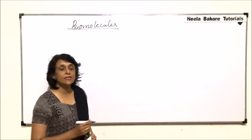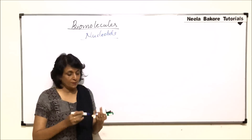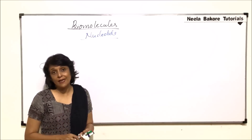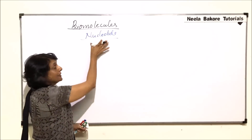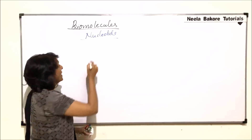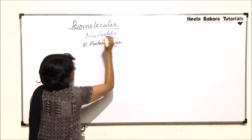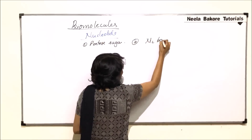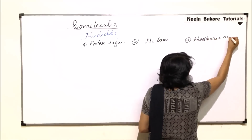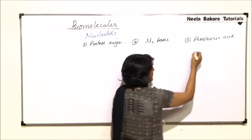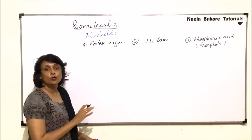In this video we will take up the next biomolecule, that is nucleotide. We will see what exactly nucleotides are made up of first, and then we will come to nucleic acids, which are actually polymers of these nucleotides. Nucleotides are micromolecules — their molecular weight is less — and they are made up of three things: pentose sugar, nitrogen bases, and phosphoric acid. Many times this phosphoric acid is only written as phosphate; it is one and the same thing.